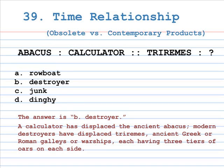Number 39: time relationship — obsolete vs. contemporary products. Abacus is to calculator, as trireme is to A. Robo, B. Destroyer, C. Junk, D. Dinghy. The correct answer is B, Destroyer. A calculator has displaced the ancient abacus. Modern destroyers have displaced triremes — ancient Greek or Roman galleys, or warships, each having three tiers of oars on each side. By the way, a junk is a Chinese sailing vessel.